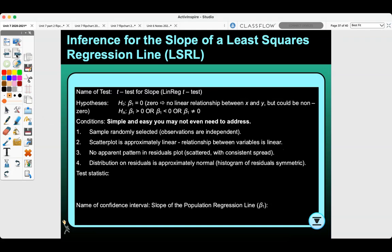So the name of our test that we're going to use is the t-test for slope. On your calculator is the linear regression t-test. Our hypotheses are: null hypothesis is beta 1 equals 0, 0 means there's no linear relationship between x and y, but could be non-zero. Our alternative hypothesis is beta 1 is greater than 0, less than 0, or not equal to 0. Our conditions are simple and easy, and you may not even need to address.